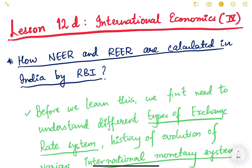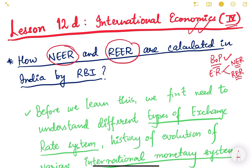Hello friends, let us continue with international economics. This is the fourth video of this lesson. Till the previous video we studied about the balance of payments, the meaning of exchange rate, and two main concepts: the nominal exchange rate and real exchange rate. We also got introduced to NEER and REER — nominal effective exchange rate and real effective exchange rate.